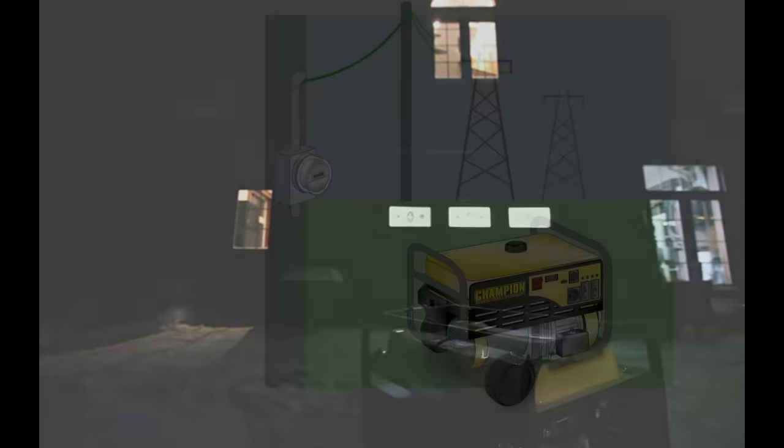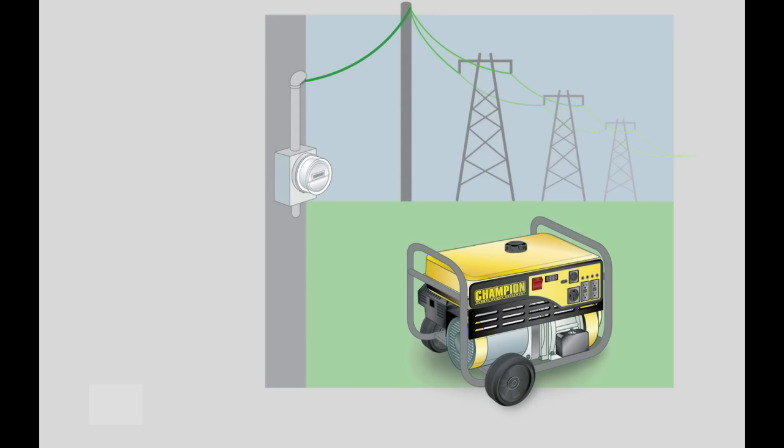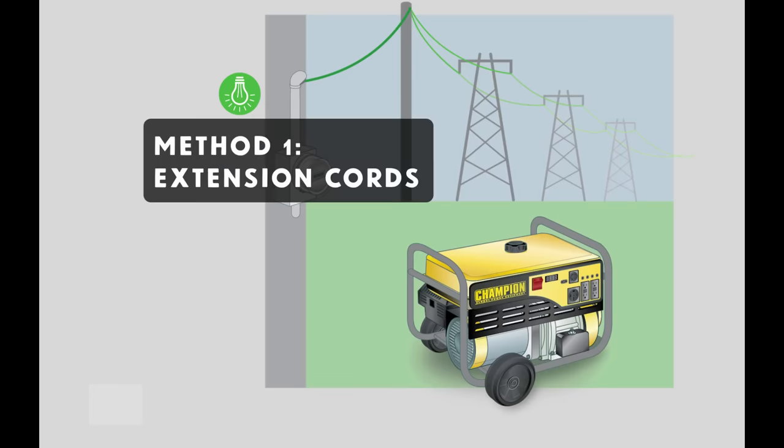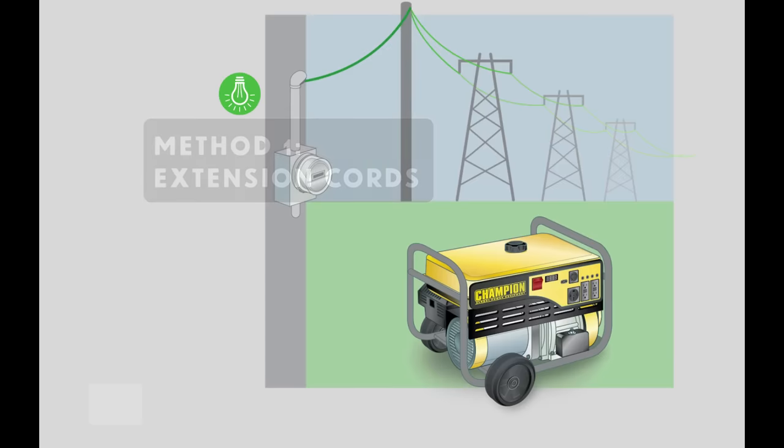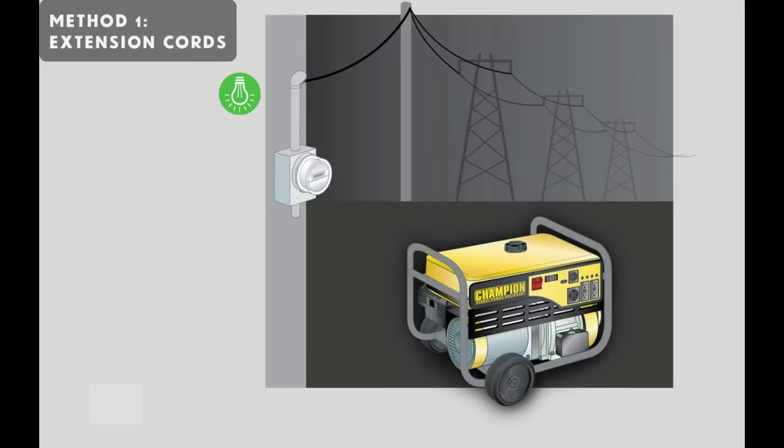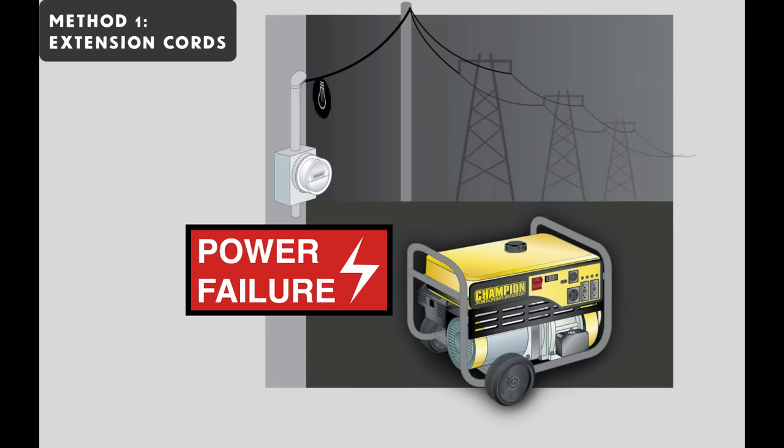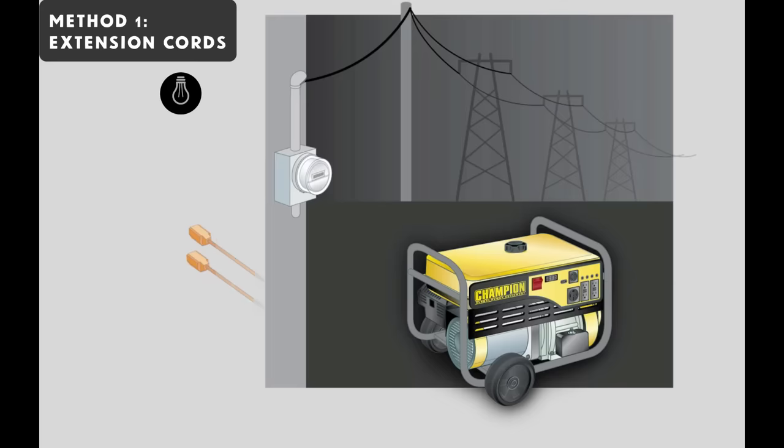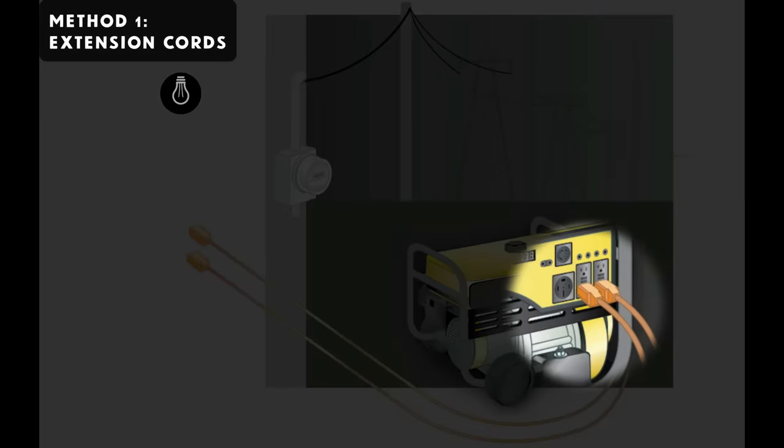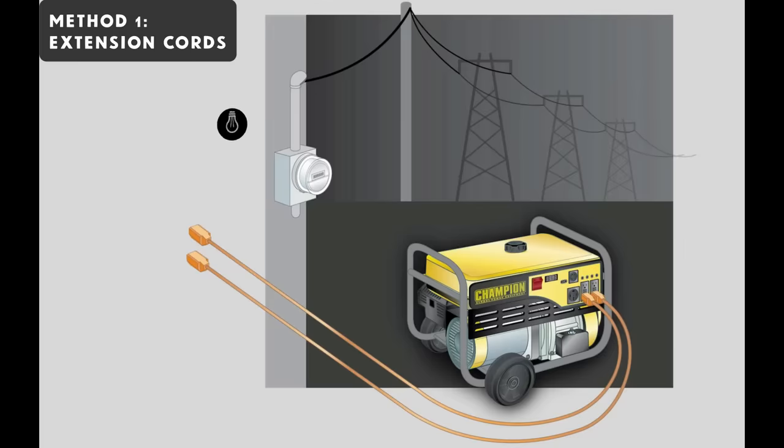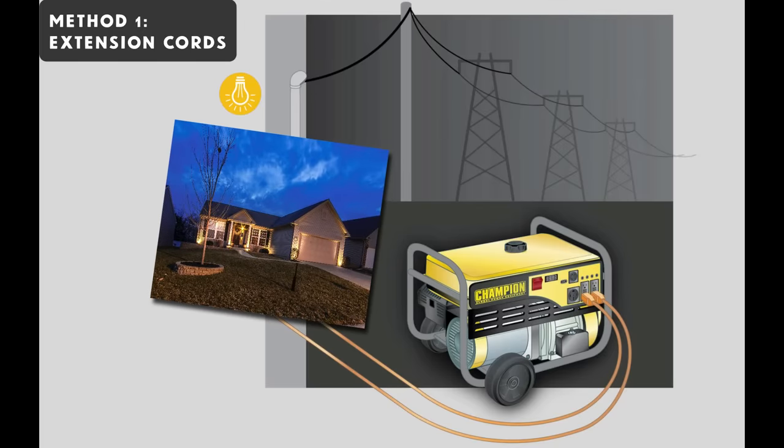If you've got a portable generator and you want to use it to power things in your home during an outage, you're going to have to make some kind of connection between the generator and your house. This first of the three legal methods that I'm going to tell you about here is really pretty simple. Imagine for a moment that a power failure sets in. You can simply grab some ordinary extension cords, plug them into the regular outlets on the generator, and fish those extension cords into your home and plug things in.